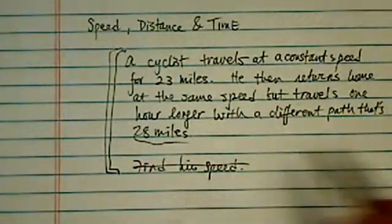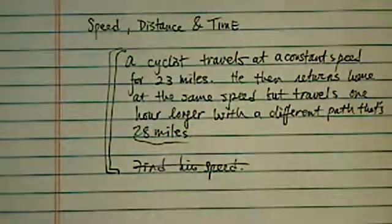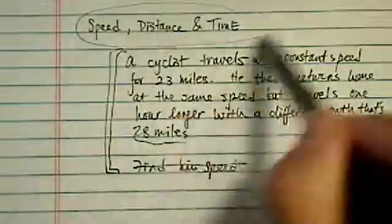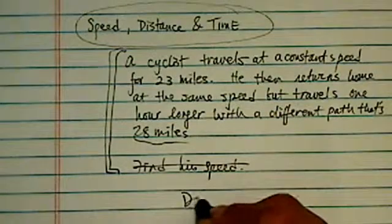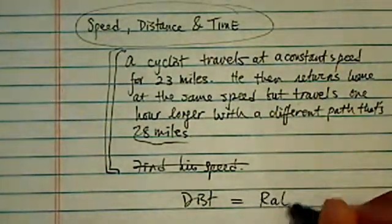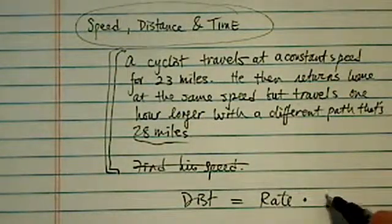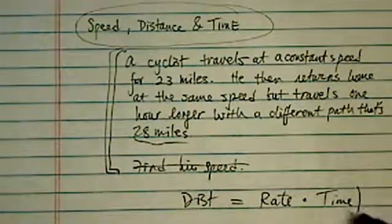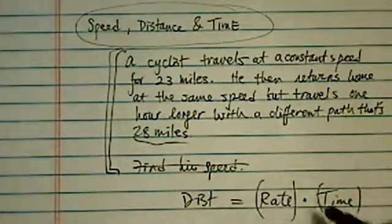All those tricks going backward and forward really come down to one concept. And the concept is this: Distance is equal to rate, or speed, times the time you spend, or multiplied by the time you spend.